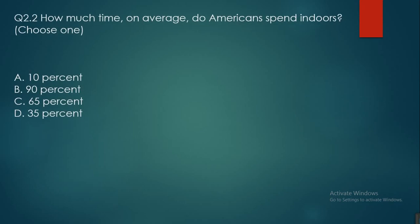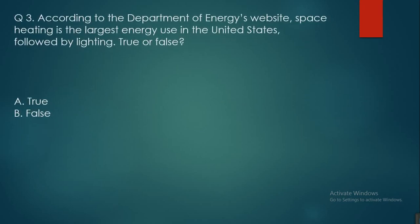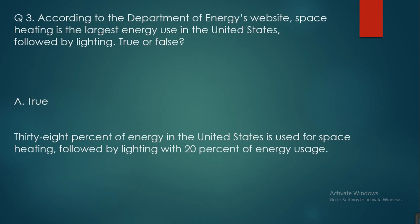Question two: how much time on average do Americans spend indoors? Options: 10%, 9%, 65%, or 35%. The answer is 99% according to the EPA website. Question three: according to the Department of Energy's website, space heating is the largest energy use in the United States, followed by lighting — true or false? The answer is true, because 38% of energy in the United States is used for space heating, followed by lighting with 20% of energy usage.